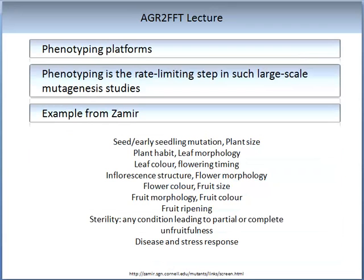Phenotyping is a rate-limiting step in large-scale breeding. Therefore, one might want to develop phenotyping platforms. There is an example stated by Zaymar. Phenotyping should include seed and early seed mutation, plant size, plant height, leaf morphology, leaf colour, flowering timing, inflorescence structure and flower morphology, flower colour, fruit size, fruit morphology, fruit colour and fruit ripening. Any condition leading to partial or incomplete unfruitfulness should be selected against, and you should look closely at disease and stress responses when setting up your phenotyping platforms.